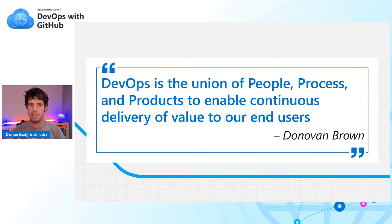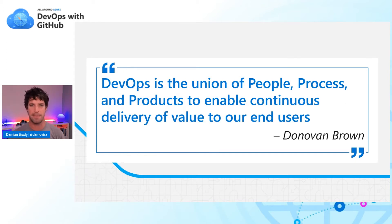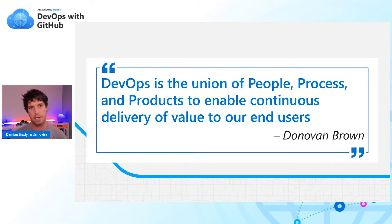We've looked at some of the people, process and products issues, especially the people and process. We've touched on GitHub Actions and a few other tools like VS Code and Codespaces. But we haven't really touched on the delivering value to our end users part, and that is really the most important part. While this stuff works really well on our local machines, you really want this to be in the hands of customers. Otherwise, what are you really doing?